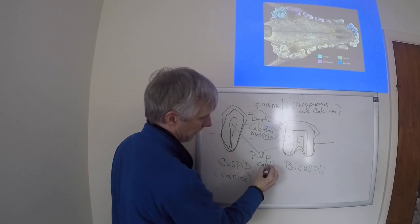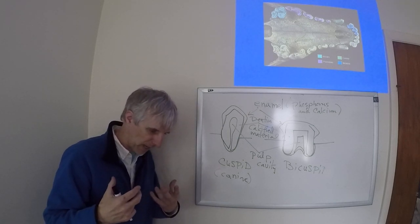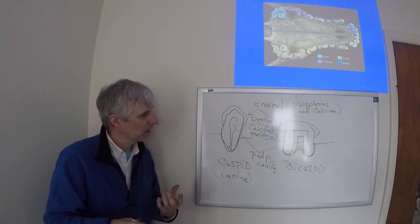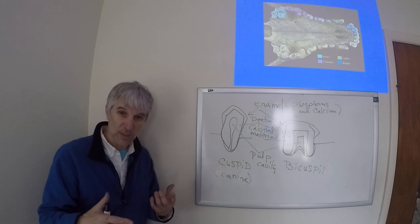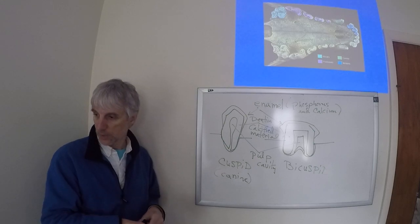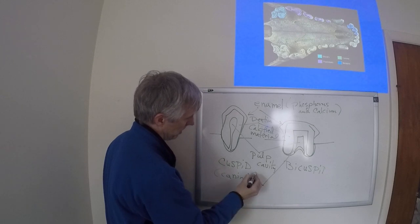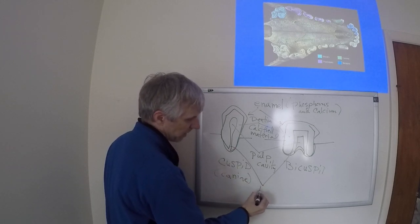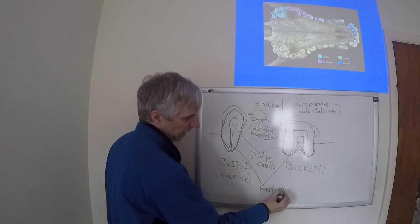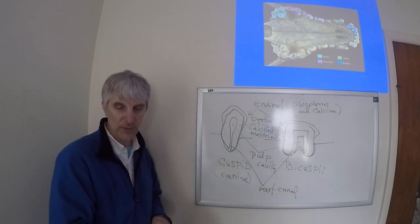In the pulp cavity you have the circulatory system - capillaries - and you'd also have the nervous system, so neurons in the pulp cavity. Then the material that connects to the pulp cavity is what's called the root canal. This is how that stuff gets into the tooth - the circulatory system and the neurons, the nervous system.